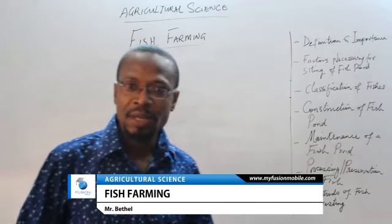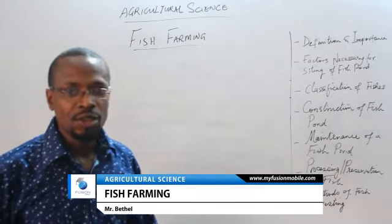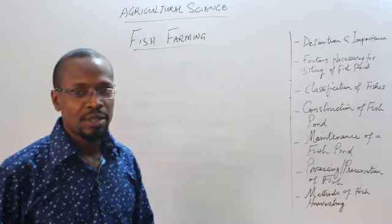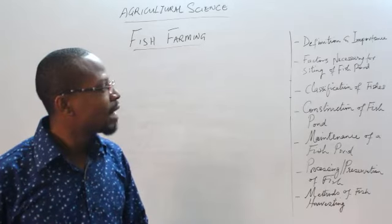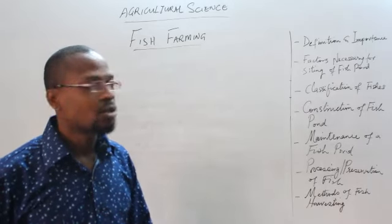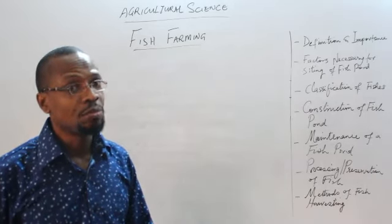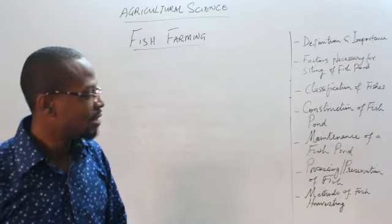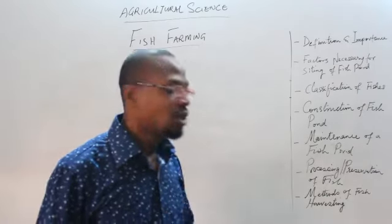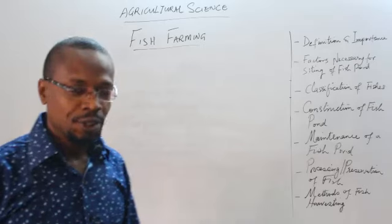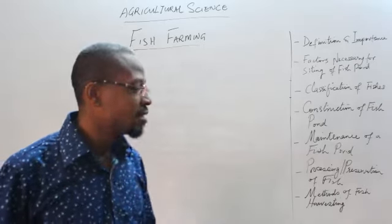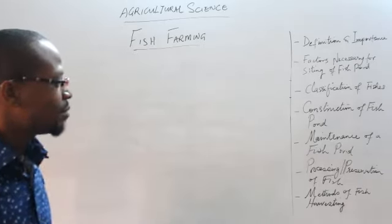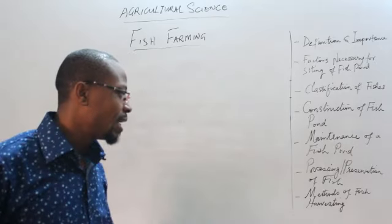Under fish farming, we'll look at the following subheadings: definition and importance of fish farming; factors necessary for siting a fish pond; classification of fishes; construction of a fish pond; maintenance of a fish pond; processing and preservation of fish; and finally, methods of harvesting fish.